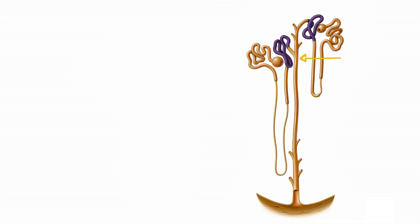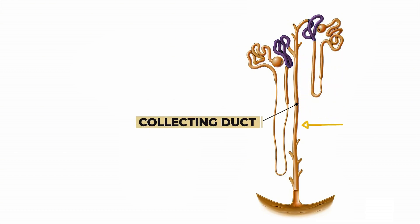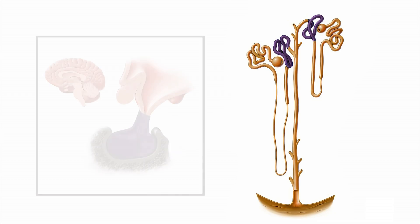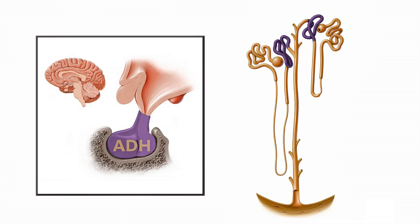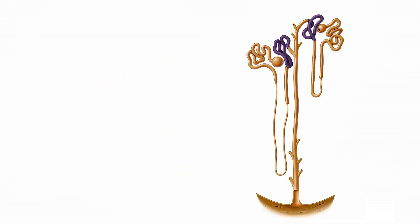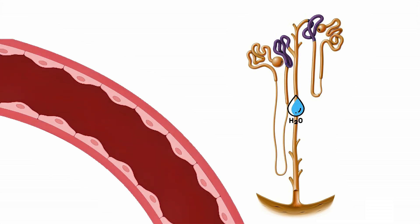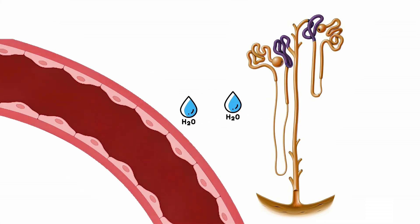Gradually, the filtrate becomes more concentrated as it moves into the collecting duct. If the body lacks water, the pituitary gland secretes the ADH hormone. This hormone signals the cells in the collecting duct, causing them to form pores, allowing more water to be reabsorbed back into the blood.